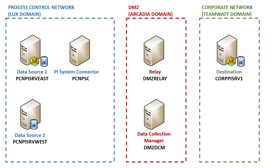Let's take a look at the machine names. The two source PI Servers are called PCN PI Serve East and PCN PI Serve West. The machine on which we are going to install PI System Connector is called PCN PSC. The machine in the DMZ where we are going to install Relay is called DMZ Relay. The machine where we install PI Data Connection Manager is called DMZ DCM. The Destination PI Server in the Corporate Network is called Corp PI Serve 1.